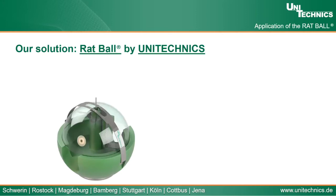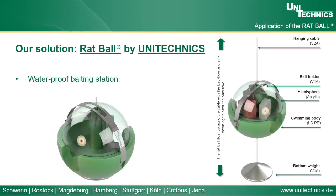Here in Germany, at Unitechnics, we have developed the Rat Ball — our solution for rat control in sewers — also to ensure that anticoagulants won't come into contact with the wastewater. It is a waterproof baiting station. At the bottom there is a weight of three kilograms which keeps it still in the manhole in case of backflow. When backflow comes, the whole body swims up with the water level and sinks down again when the backflow is gone. There is a cable to hang it at the top of the shaft, and metal pieces inside to hold the bait.